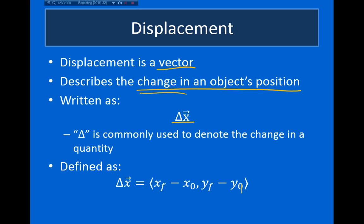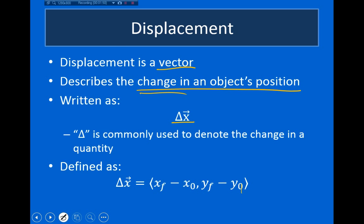We define displacement as a vector quantity. The x-component is the final x position minus the initial x, and the y-component is the final y value minus the initial y. So displacement describes how far you've moved and in what direction.